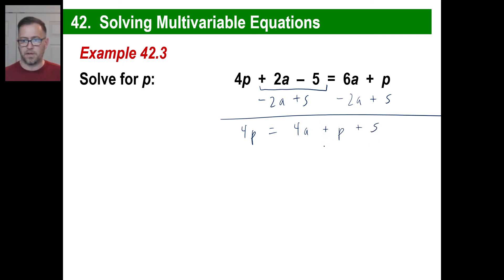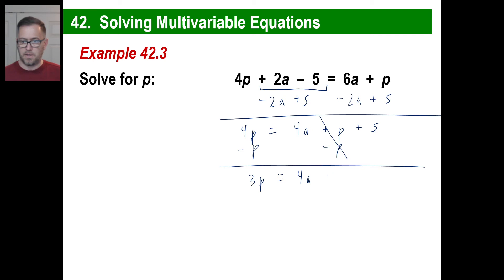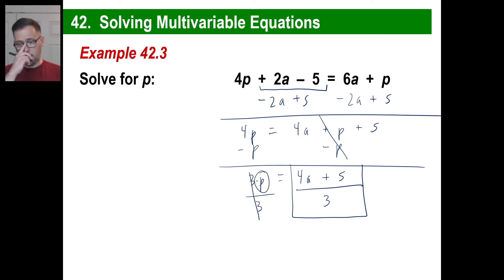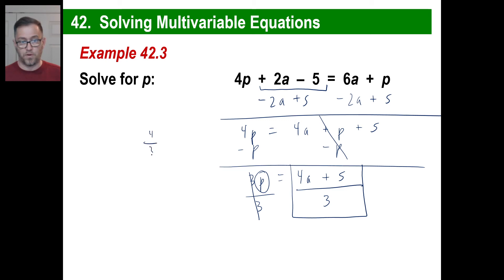Now I want to get rid of the p on the right side. So I'll subtract p here and subtract p there. And I get 3p on the left — the p on the right is gone — equal to 4a plus 5. The last thing: divide by 3. And this is your answer. If you look in the back of your book and they write individual fractions, it would be 4a over 3 — you might even see it written as 4 thirds times a — plus 5 thirds. That would be your answer. Pause and copy.